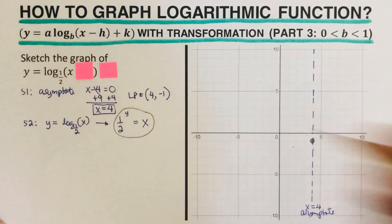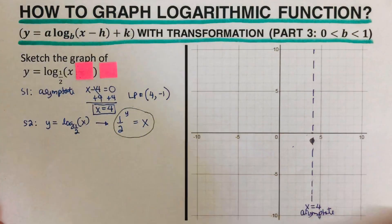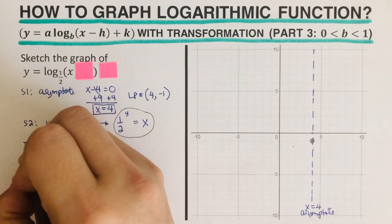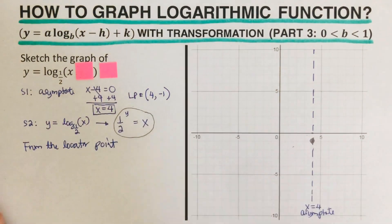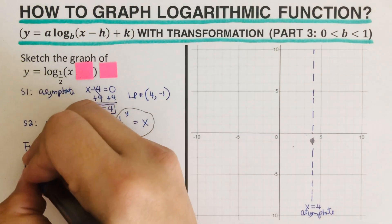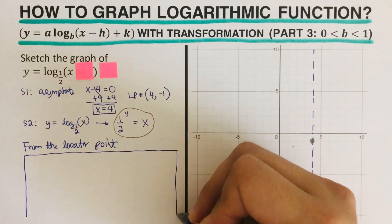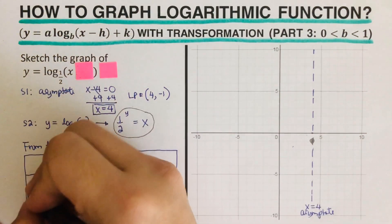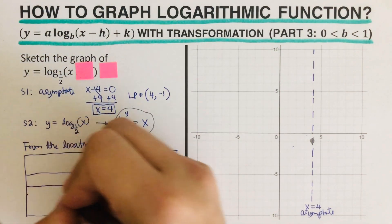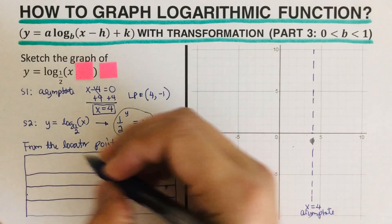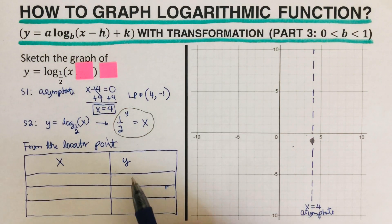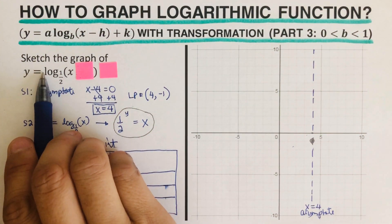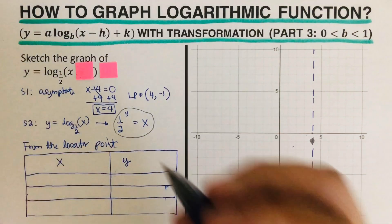The base is one half, so one half raised to the power y is equal to x. This is the equation we're going to use in order to set up the table, starting from the locator point.